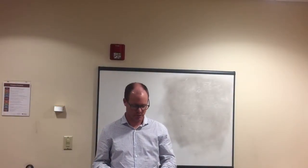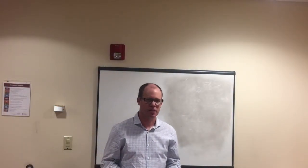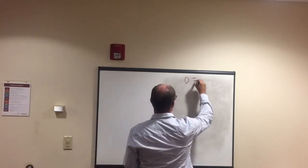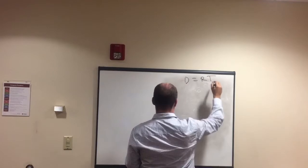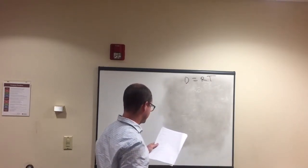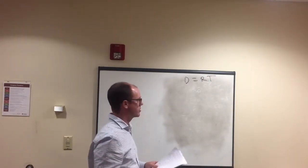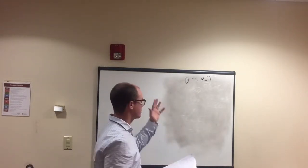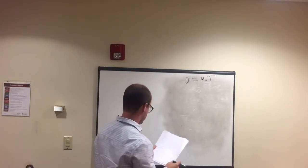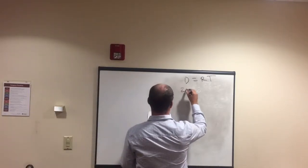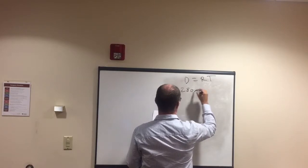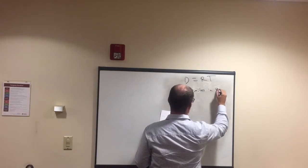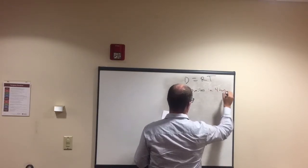We're going to look at ratios, proportions, and rates. First, we'll look at distance equals rate times time. They'll always give you two of the three values — in this case, the question says 280 miles in four hours.